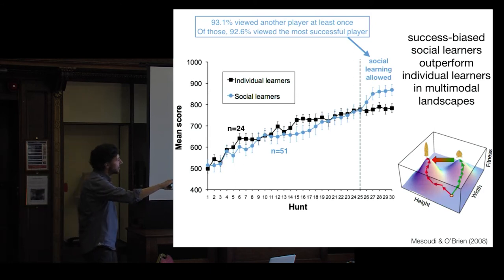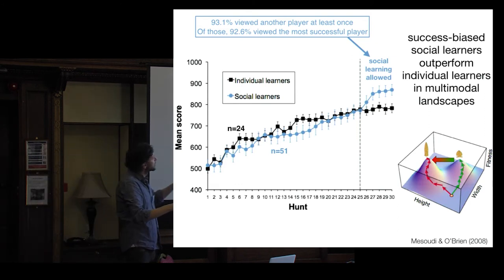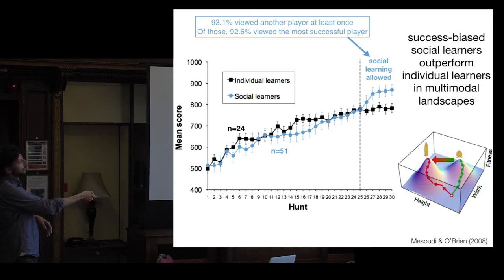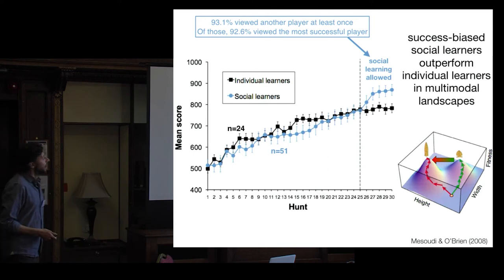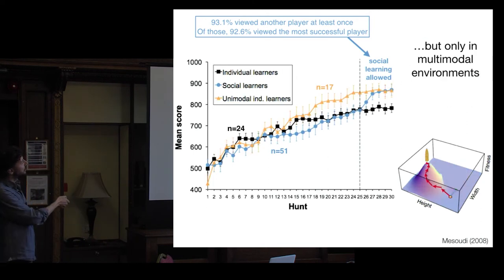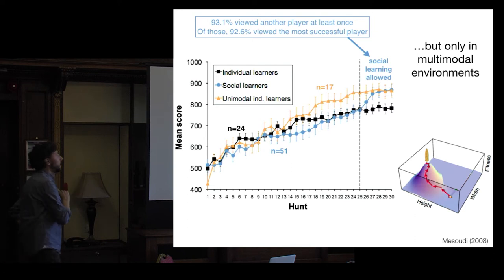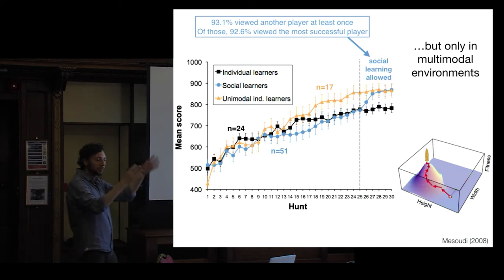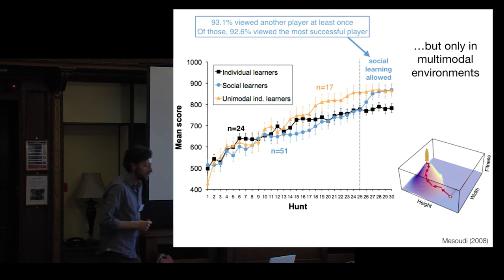Various analyses showed this benefit arose from the multimodal landscape — participants had converged on different peaks, and copying allowed people who'd found low-fitness peaks to jump to the higher peak found by the most successful player. When we manipulated the landscape to be unimodal — just one single best arrowhead design — individual learners with no social learning ended up with the same score as social learners. So social learning isn't always adaptive; it crucially depends on the shape of the adaptive landscape.